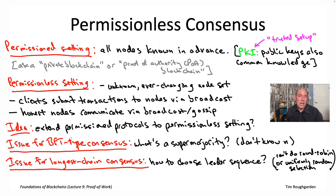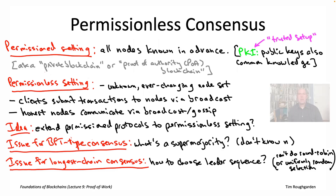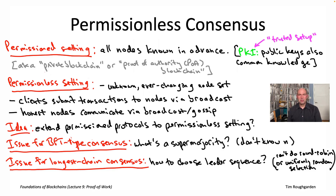There are different trade-offs between those two styles of consensus, but for both, we proved consistency and liveness properties under various assumptions. For the permissioned setting, we were quite happy with those solutions. In thinking about permissionless consensus, the first thing you should ask is: why don't our tried-and-true solutions for the permissioned case carry over immediately? Problems come up right away once you try to run Tendermint or permissioned longest chain consensus in a permissionless setting.